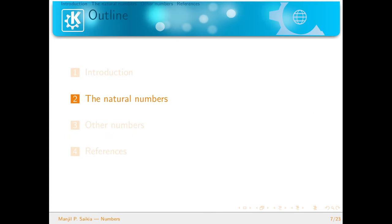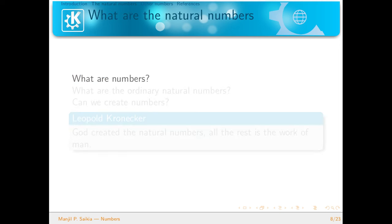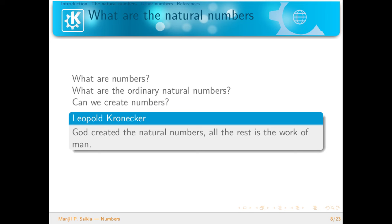Let us move to the first example — the set of natural numbers. One obvious question is: what are numbers? What are the ordinary natural numbers, and can we create them? These statements seem obvious because we have been accustomed to using numbers since childhood, but these are very important mathematical questions. There is a famous quote by Leopold Kronecker: 'God created the natural numbers; all the rest is the work of man.' I believe he may have had the Peano system in mind, because the set of natural numbers is the simplest example of a Peano system, and as we will see, we can create a lot of things from this simple definition.